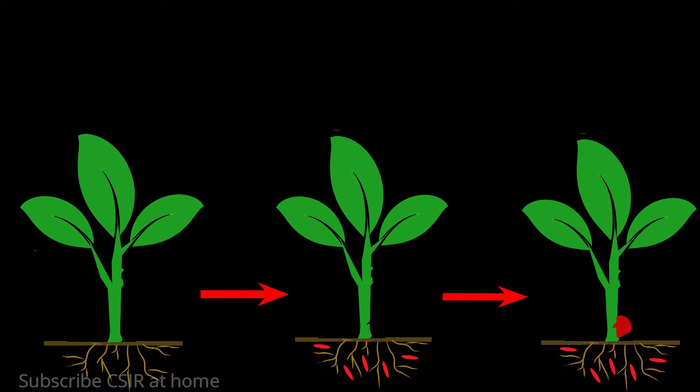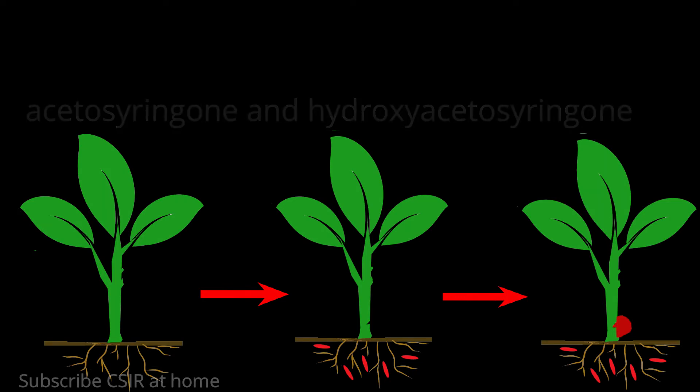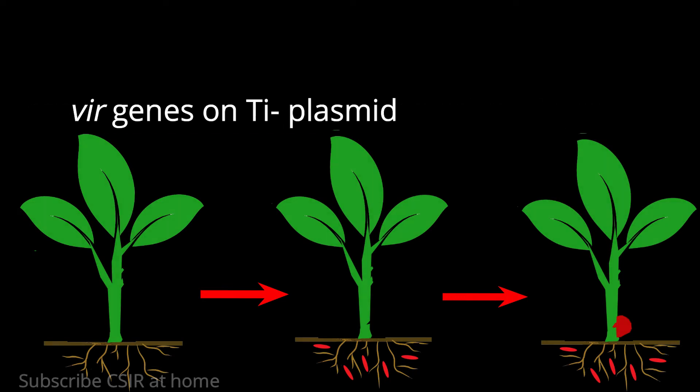The wounded plant produces phenolic compounds — acetosyringone and hydroxyacetosyringone. Agrobacterium tumefaciens responds to these plant phenolic compounds; they induce virulence genes that are carried on the Ti plasmid.